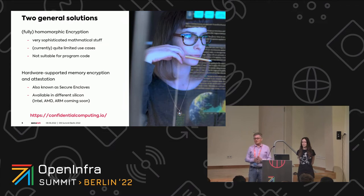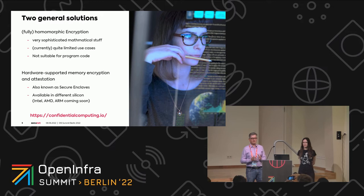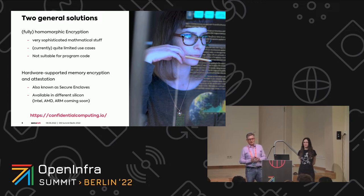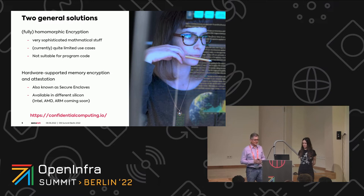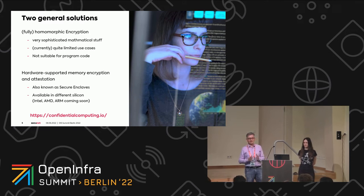There are two general solutions for protecting data in use. A mathematical solution is fully homomorphic encryption — a very interesting mathematical principle, sophisticated stuff. It's currently of quite limited use because it's really hard to use for general purposes. We have some specific use cases, like searching in databases. But it's not ready for prime time, and it's especially not suitable for program code — you cannot protect program code with homomorphic encryption.